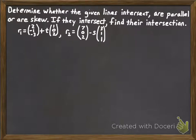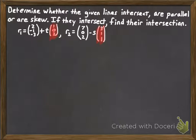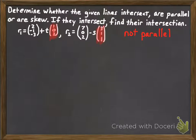We need an example where we determine if two lines intersect, are parallel, or are skew — and if they intersect, find the intersection. First, let's address the parallel question by comparing direction vectors. Is (1, 0, 2) a scalar multiple of (3, 1, 1)? It turns out they're not — 3 divided by 1 is not the same as 1 divided by 0 or 1 divided by 2, so those directions are not scalar multiples. We already know the lines are not parallel. They might still be skew or might intersect, so we need to determine that by checking whether there's a value of T and S that makes R1 equal to R2.